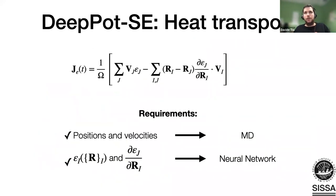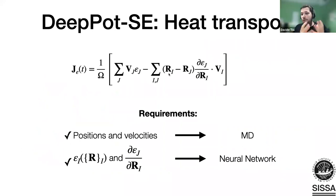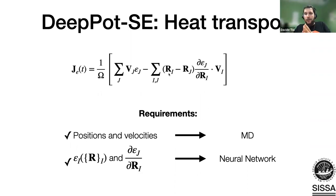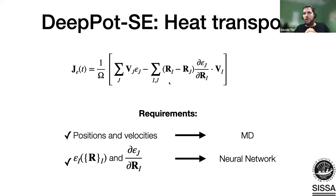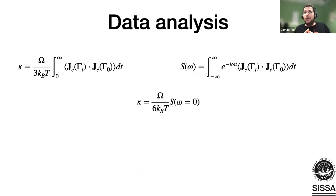Now, what we want to compute is heat transport—the Green-Kubo integral of the energy current. To compute this, we require positions and velocities, given at each MD step, plus local energies and their derivatives, provided by the neural network. Our neural network splits the total energy into atomic contributions and also computes derivatives of local energies when computing forces. The neural network therefore seems to be a good potential for computing transport properties.